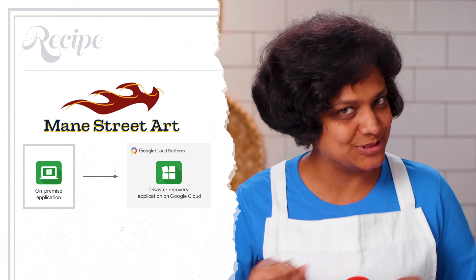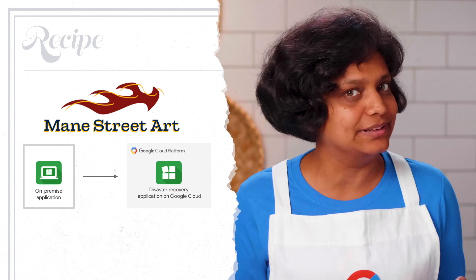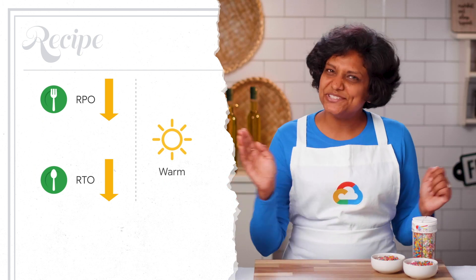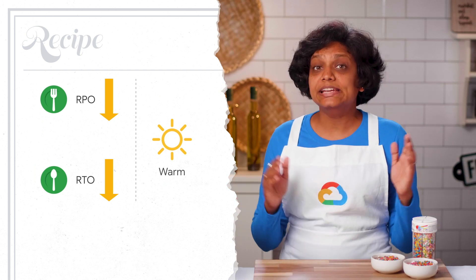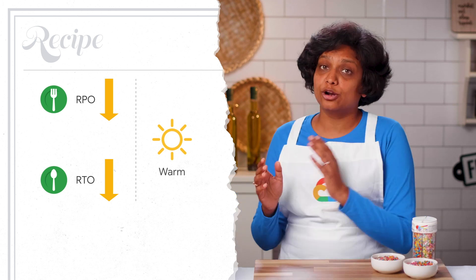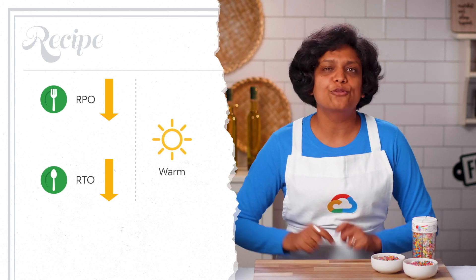A little recap. In the last episode, we were talking about MainStreetArt that runs their applications on-premise and are building a DR infrastructure on Google Cloud. We helped them set up a cold DR plan. MainStreetArt has changed a bit since then. They now need to set up a warm standby DR pattern to keep the RTO and RPO values as small as possible without the effort and expense of a fully HA configuration, which means to support a disaster, they need some replication and redundancy built into the system.